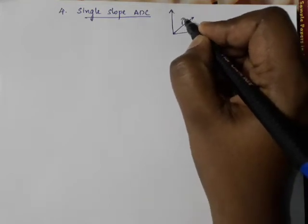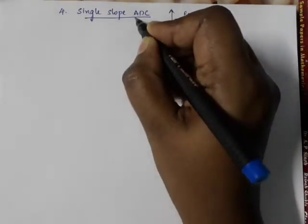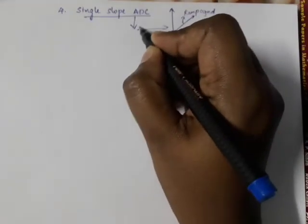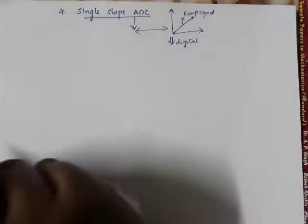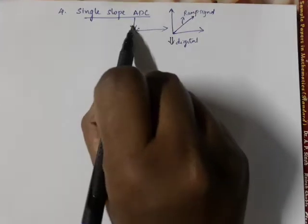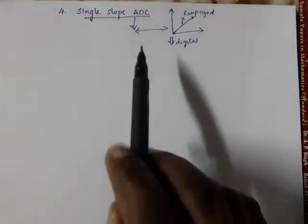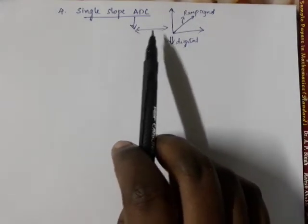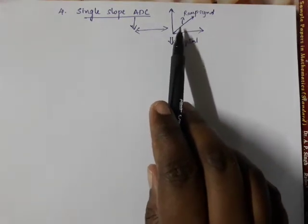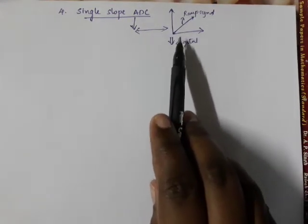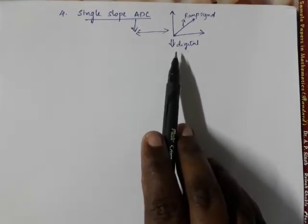This is a ramp signal. We have one analog input and a ramp signal. We compare them, and find the corresponding digital value — this is our basic concept. The Single Slope ADC works by comparing the slope of the ramp signal with the analog input signal, and finally producing the corresponding digital output.